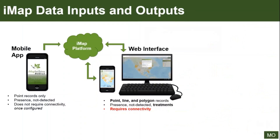Originally there is the web interface and the mobile app. The web interface lets you do everything IMAP has to offer — points, lines, polygons, presence, not-detected, and treatments. But of course it's a web interface; you need to be connected to the Internet. We know many of our partners encounter invasive species out on the trail or in a remote area and need to record surveys when they're not connected to Wi-Fi. That's where the mobile app comes in — the go-to simple data reporting tool for presence records, not-detected records, points only.